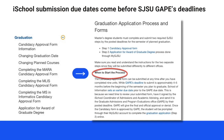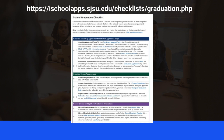The deadline to submit the candidacy approval form to iSchool is approximately four to five months before the beginning of the semester in which you intend to graduate. iSchool submission due dates come before SJSU GAAP's deadlines and are listed on our website. Check out the iSchool Graduation Checklist for these dates as well.